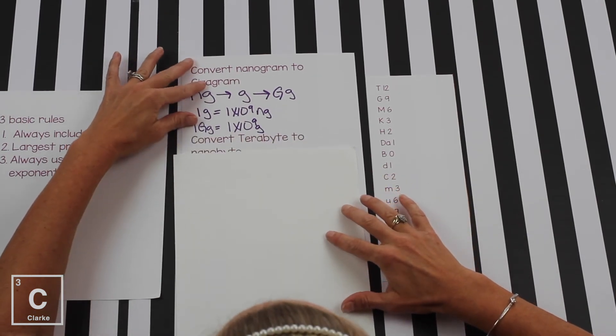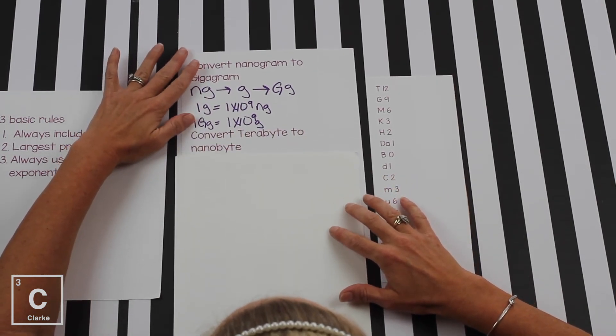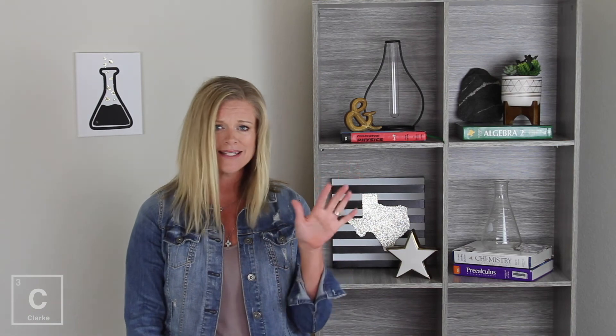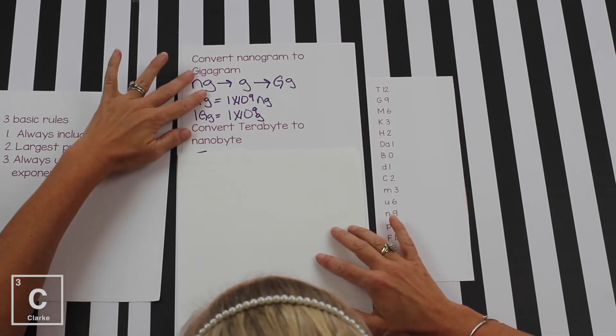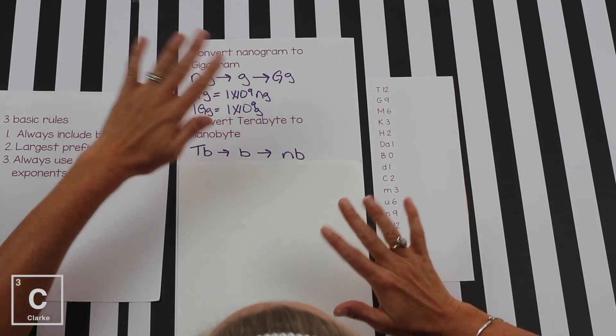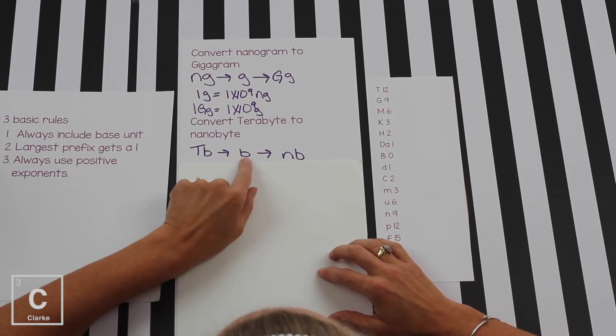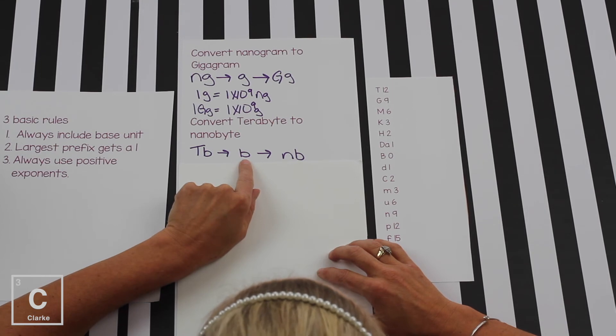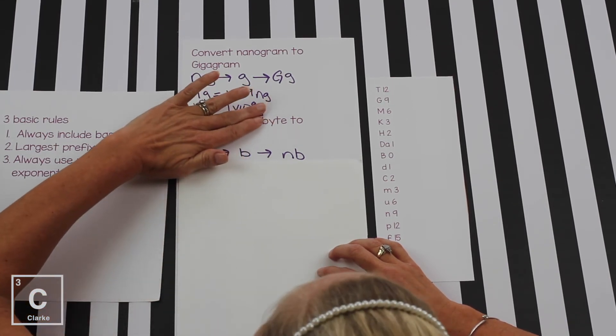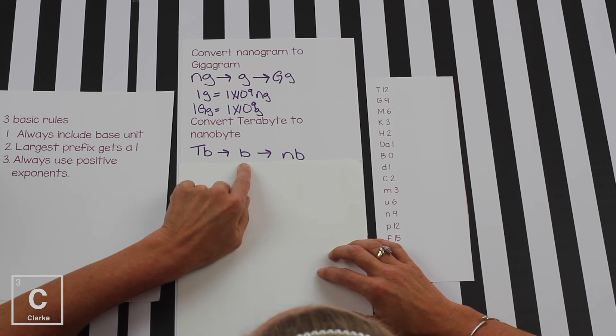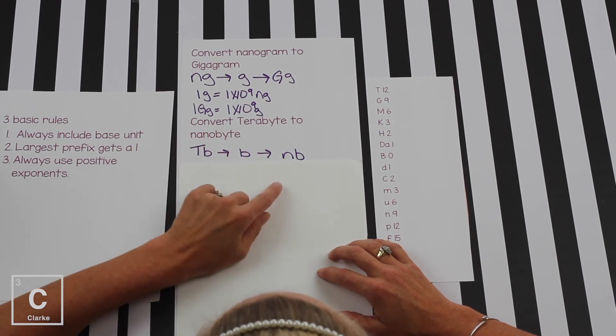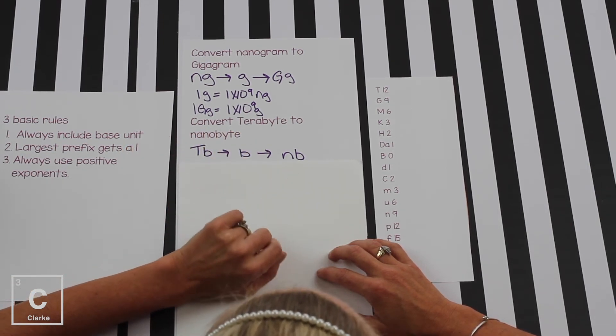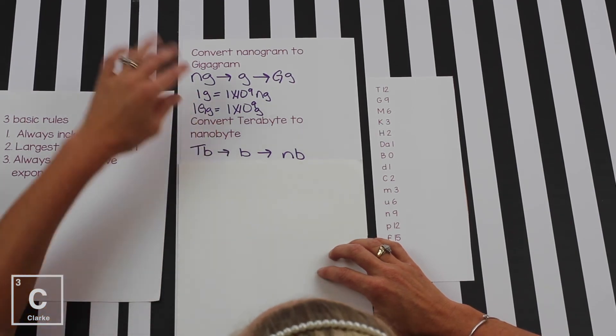Let's try another example. Let's convert terabytes to nanobytes. Bytes. Hopefully, that's familiar. This is what your computer uses. All the memory. Megabytes, kilobytes, all of that metric system. So, again, let's make a plan. We're starting with tarot. We've got to go through the base unit again. Now, I do have a B there, but that's not for base. That's for bytes. Byte, if we take off that prefix, that's the base unit. And then we're going to nanobyte. I'm kind of doing nano again. We use nano a lot in chemistry. So, I'm hoping to get you familiar with that unit.